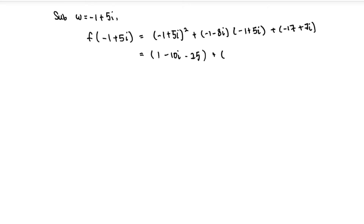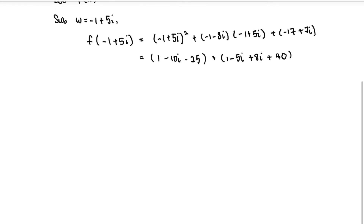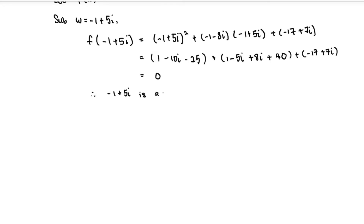Continuing the expansion of the middle term: +1 − 5i + 8i + 40, and the last part remains −17 + 7i. Adding all values together, you get zero plus zero i. Therefore, −1 + 5i is confirmed to be a root of f(w).